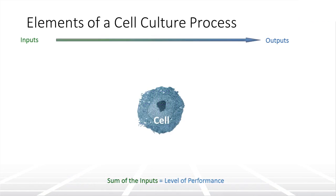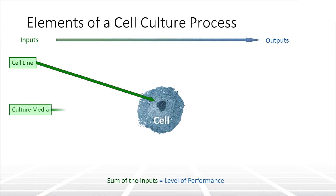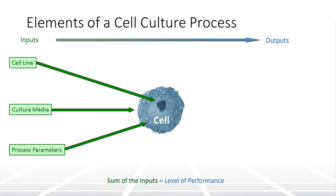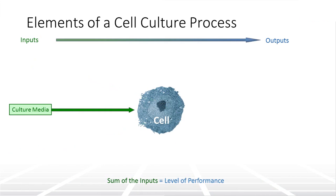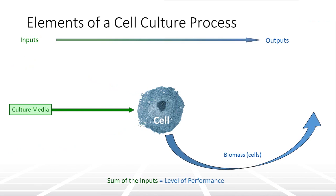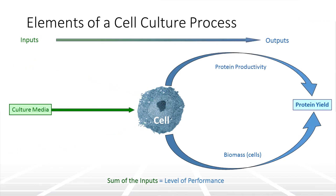This is a brief overview of the cell culture process, highlighting the three inputs that define and impact performance. Here we are going to focus on the role of the culture media. As part of media development, often the basal media is modified and optimized as the manufacturing process is developed in order to achieve high cell density or biomass, cell viability, productivity, and product quality.